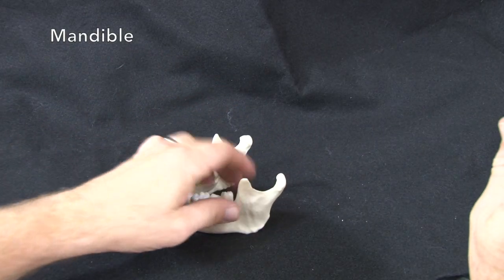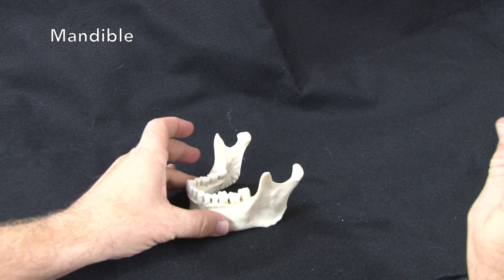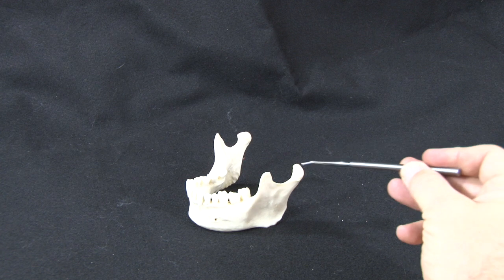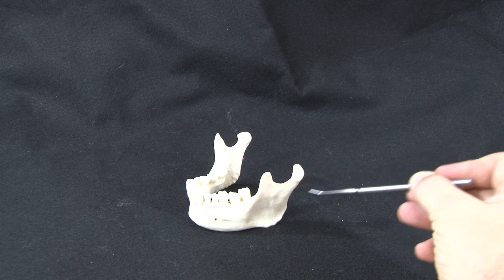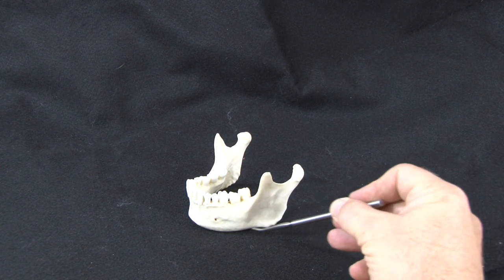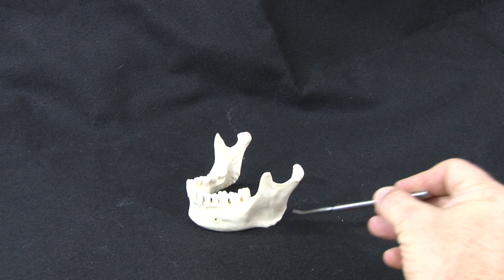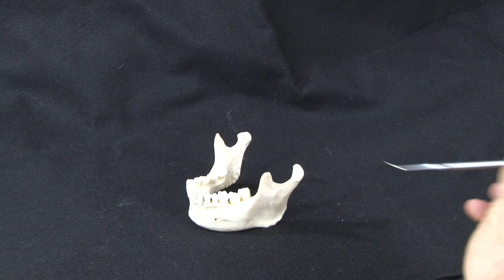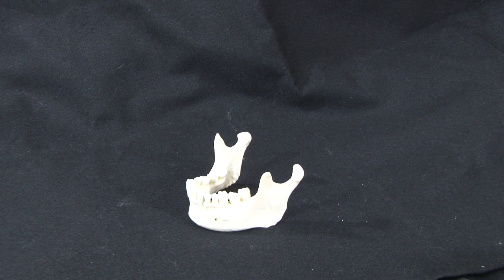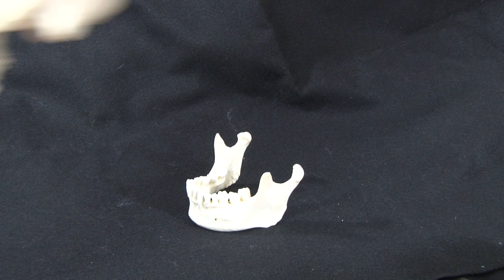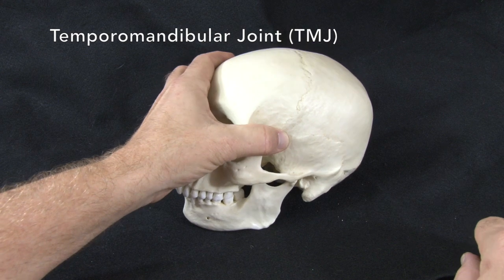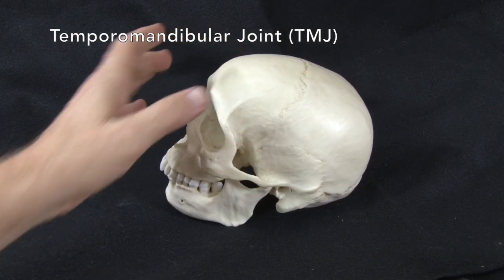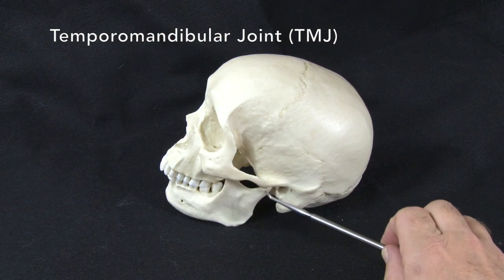The mandible has three key features: the hinge-forming mandibular condyle, and two areas of muscle attachment — the ramus and the coronoid process. The mandibular condyle and the fossa form the temporomandibular joint, or TMJ.